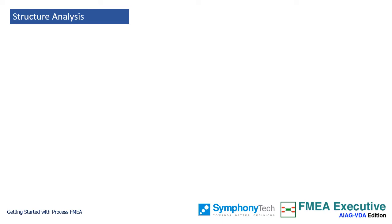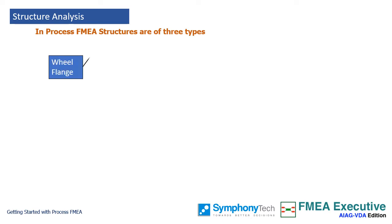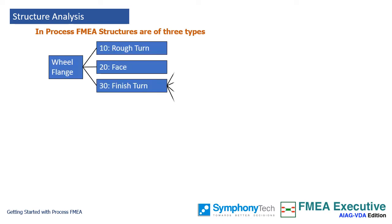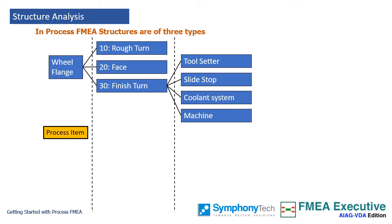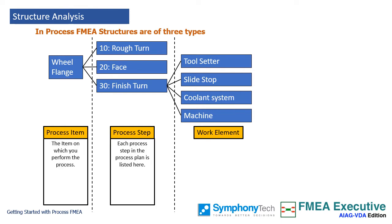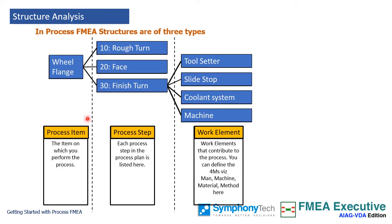To start working on your FMEA, first create the structure. In process FMEA, structures take three forms: process items, process steps, and process work elements.